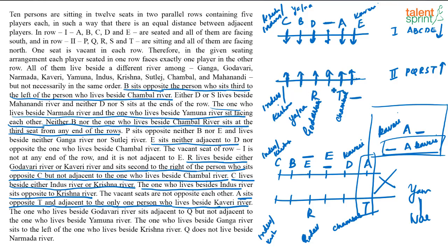P, Q and S are arranged in the remaining seats. S cannot sit at the end of a row, and P cannot sit opposite to B or E. The person beside Godavari River is adjacent to Q but not adjacent to the Yamuna person. Assuming Q in one position, Godavari is adjacent to Q, and the person on the other side of Godavari must be beside Narmada — meaning that position is Narmada and the other Yamuna-Narmada pair is fixed opposite each other.